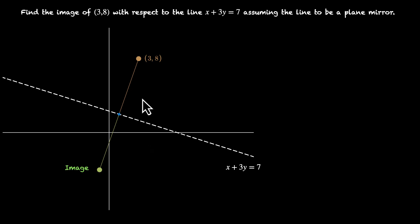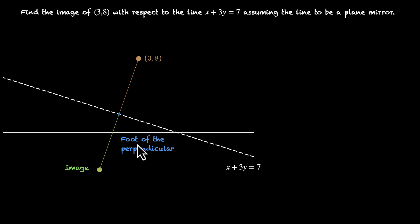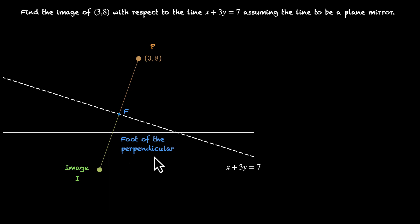Before we do that, let's label the points. This is the foot of the perpendicular, so let's call this point F — F stands for foot of the perpendicular. Point P is (3,8). Image I is what we are trying to figure out. Let's mark its coordinates as h, k.